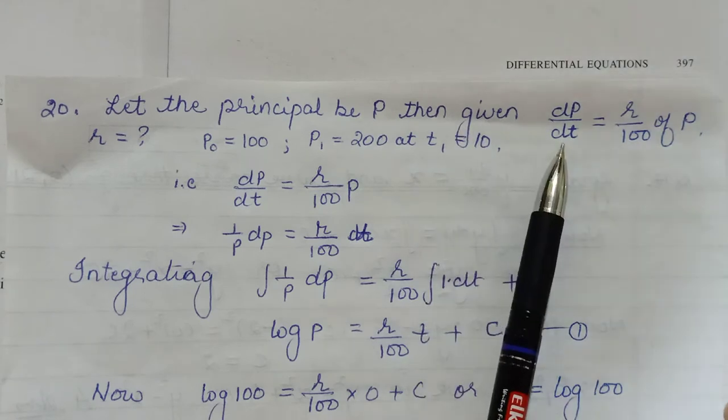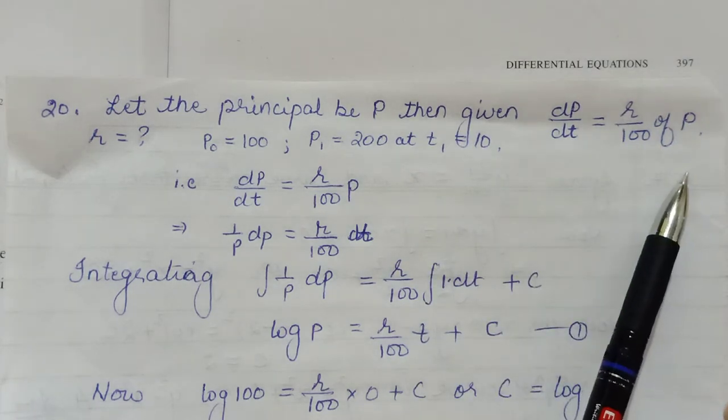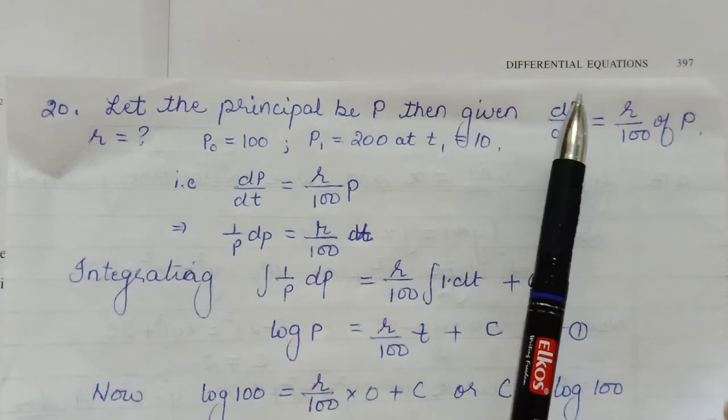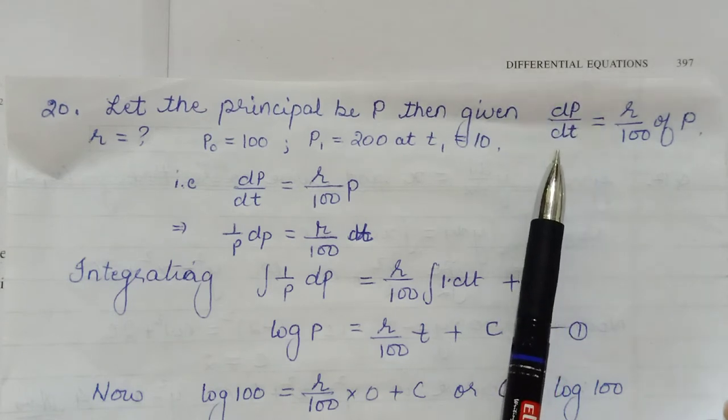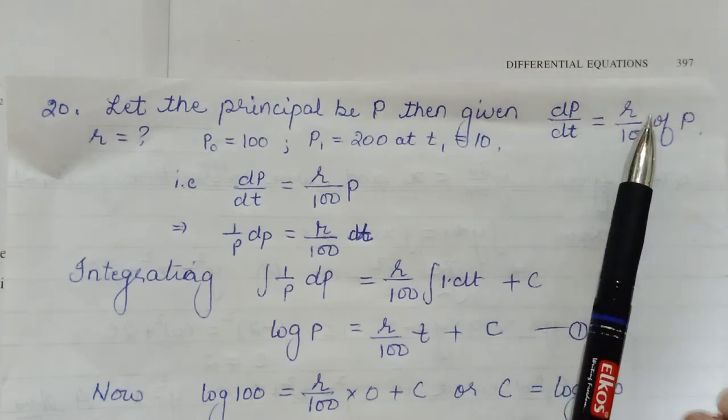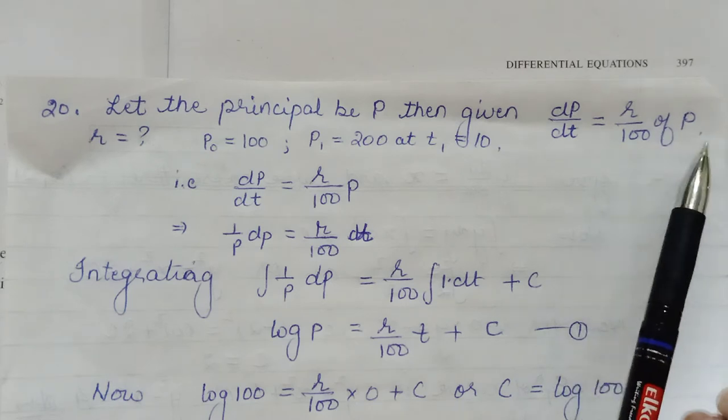is increasing at the rate of R% per year. So rate of increase of principal will be represented as dP/dt is R%, that is R/100 times P.